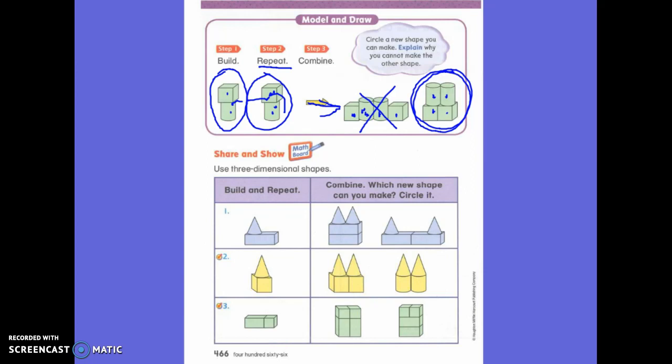Let's take a look at this first one again. What two shapes do I have? Very good. I have a rectangular prism and a cone. So if I want to repeat it, what do I want again? The same thing. I want another rectangular prism and another cone, right?